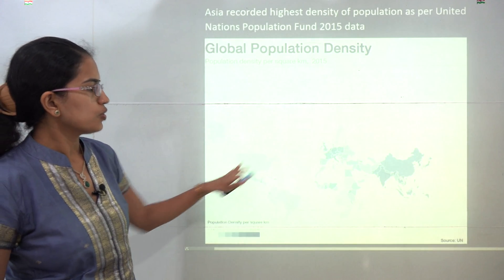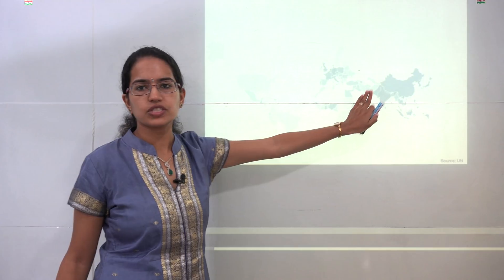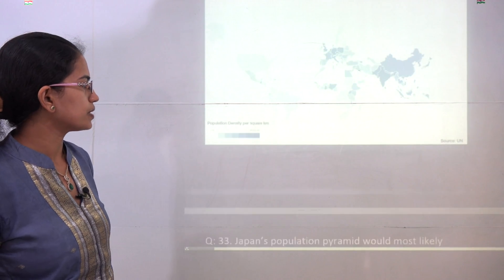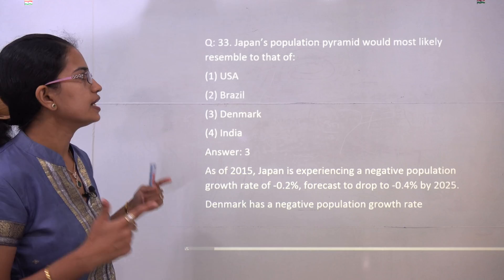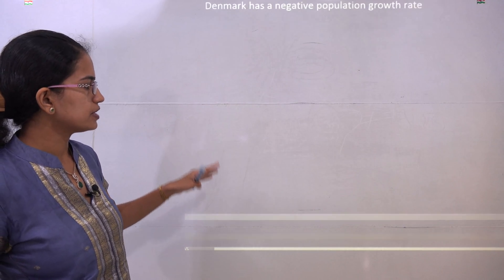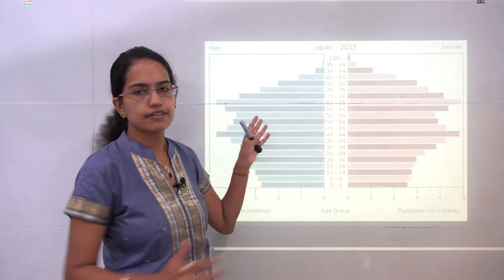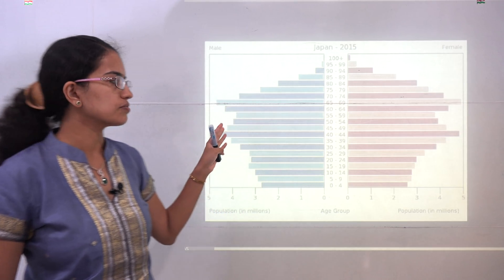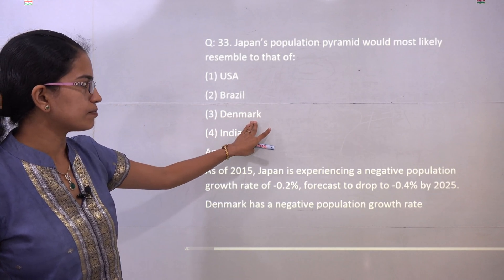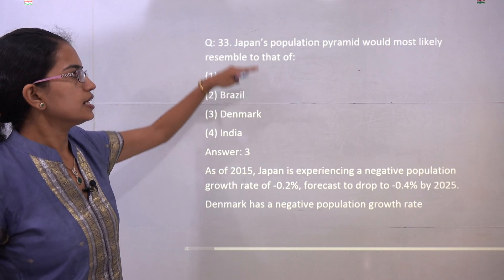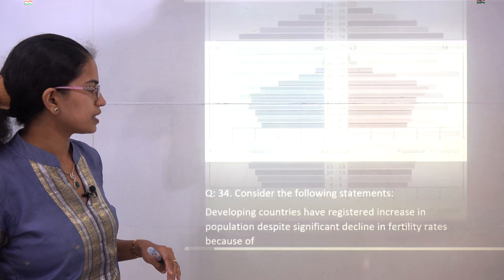You have the world map here and you can see the Asian region, which has the highest density of population. Japan's population pyramid is similar to Denmark's pyramid. As you can see in the diagram, a negative growth rate and declining population are registered, so Denmark is the correct pyramid that resembles Japan's pyramid.